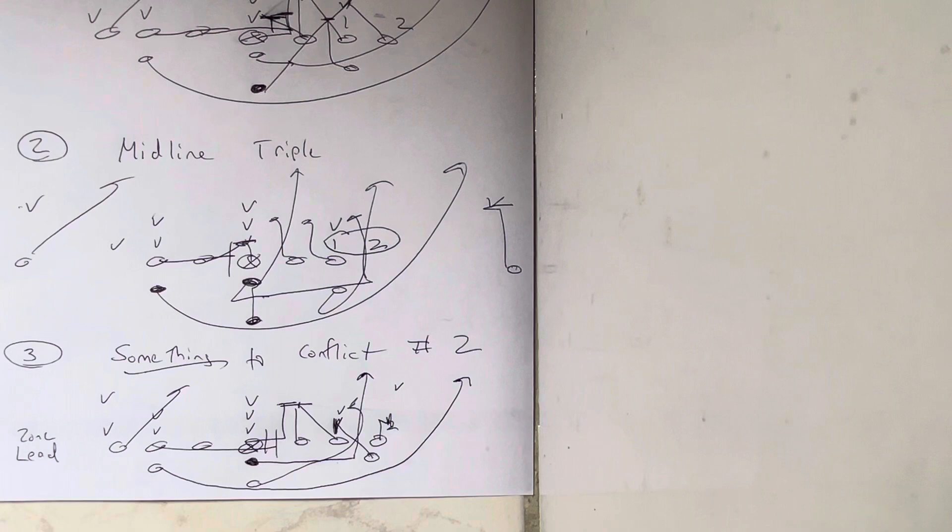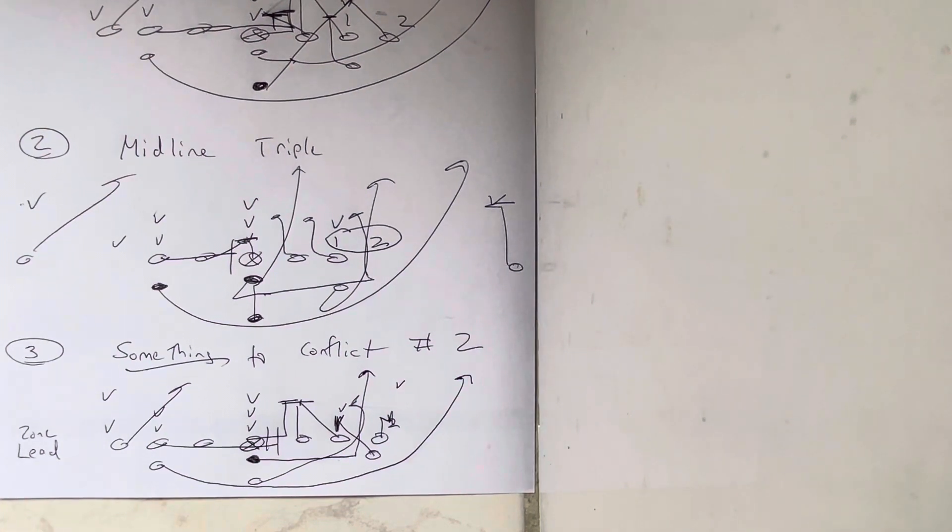Something to conflict number two. This could be kick. This could be zone lead. It could be the down. It could be B-back power. Something to conflict number two. I've drawn the zone lead here. I think Army's done some amazing things with that.